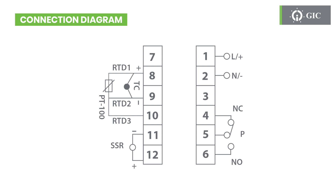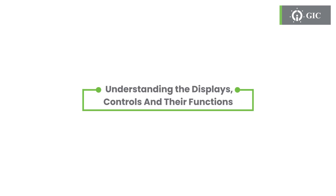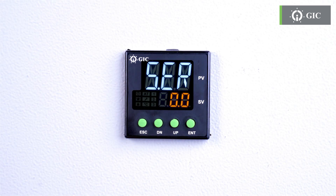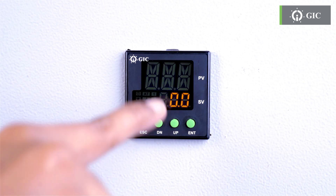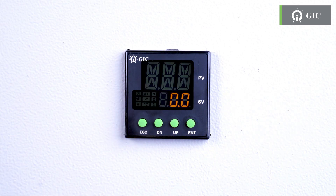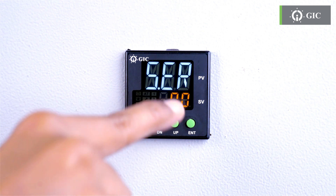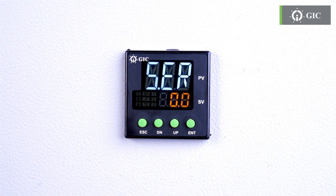Let's start by taking a look at the connection diagram. Before we get into programming, let's take a look at the buttons and their basic functionalities. Let's start with the two displays on the controller. The upper display shows the process value or PV — that is the current temperature of the process — while the lower display shows the set value or SV, which is the desired temperature set by the user.